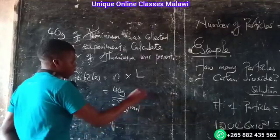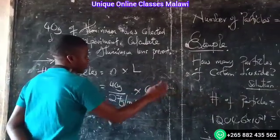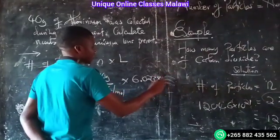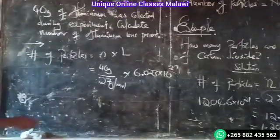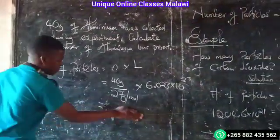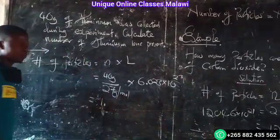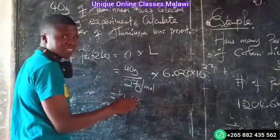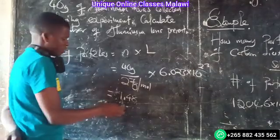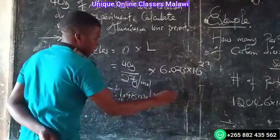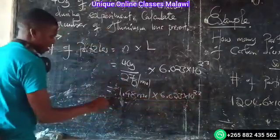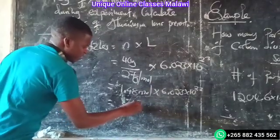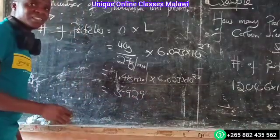We're going to have a look at this. 6.023 times 10 to the power of 23. How do you define it? We use 4.8 divided by 7.1, giving 1.4 — approximately 1.8. Then multiplied by 6.023 times 10 to the power of 23. The result is approximately 9.0 times 10 to the power of 23.